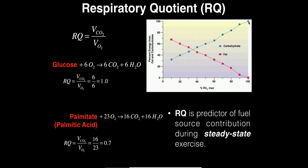Respiratory quotient is a good predictor of what fuel source is contributing to energy production during steady state exercise, and the key is that the exercise has to be in steady state. What that means from the body's perspective — the whole body — is that all the energy being produced as ATP is balanced by the ATP being consumed. When you satisfy that condition, you're in steady state exercise, which pretty much means your intensity is constant.